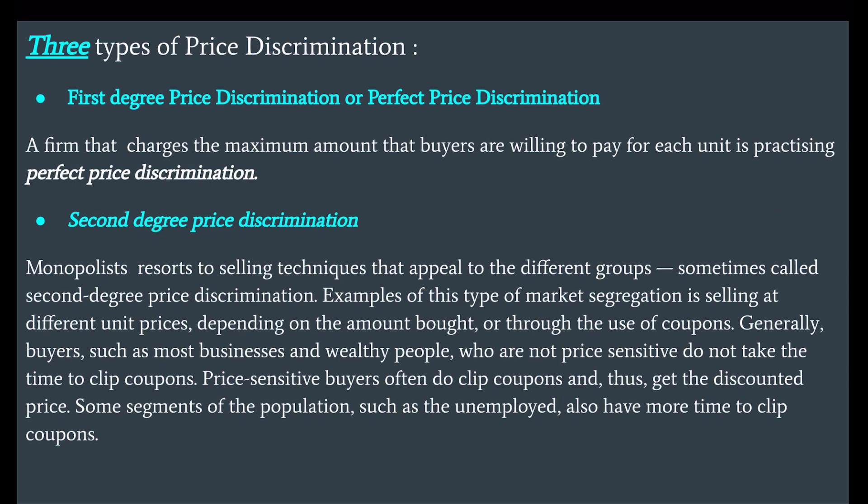Three types of price discrimination. First degree price discrimination, or perfect price discrimination — a firm that charges the maximum amount that buyers are willing to pay for each unit is practicing perfect price discrimination. Second degree price discrimination — monopolists resort to selling techniques that appeal to different groups, sometimes called second degree price discrimination.